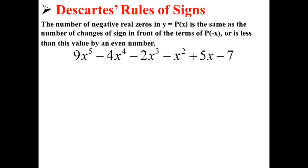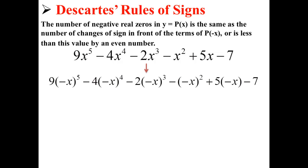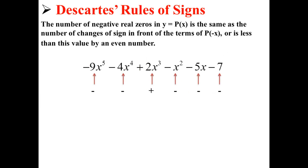Next, the number of negative real zeros is the same as the number of changes of sign in front of the terms of p of negative x, or is less than this value by an even number. So here we have p of x, and we need to rewrite this equation as p of negative x. So we have nine times negative x to the fifth, minus four times negative x to the fourth, minus two times negative x to the third, minus negative x squared, plus five times negative x, minus seven. This simplifies further to negative nine x to the fifth, minus four x to the fourth, plus two x to the third, minus x squared, minus five x, minus seven. Now we look at the sign changes of this equation. Here we have two sign changes — from negative to positive, and positive to negative. That means we have either two or zero negative real zeros.